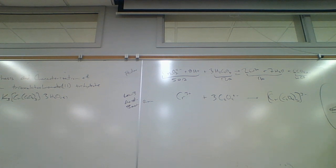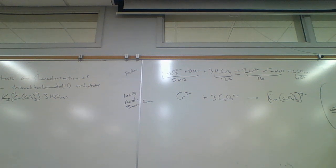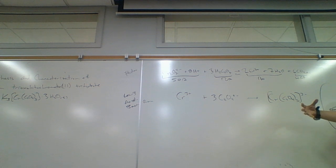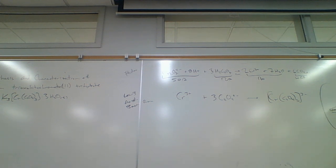How about potassium ions — do you think potassium ions would work very well? Why not? They're only plus 1. And potassium ions are big — iron 3 ions are tiny. Potassium ions are huge. So potassium ions aren't going to be very effective at precipitating this stuff out.